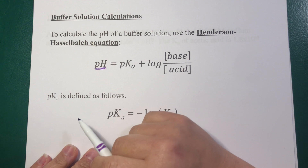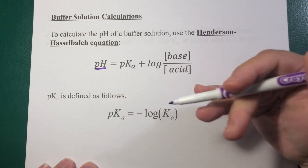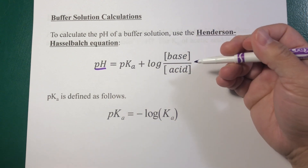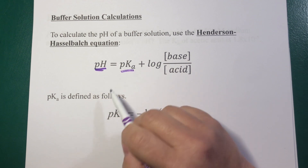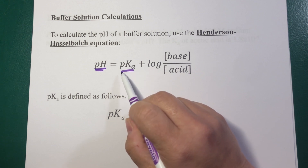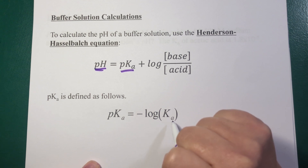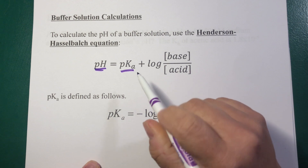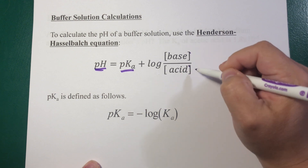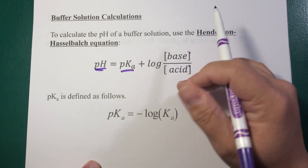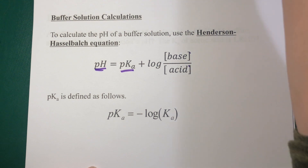To calculate the pH of a buffer solution, we use the Henderson-Hasselbalch equation, which you will see again in other chemistry courses. The pH of a buffer solution equals the pKa of the acid — where pKa is the minus log of Ka — plus the log of the concentration of base over the concentration of acid. Always base over acid, always pKa. That's how the Henderson-Hasselbalch equation works.